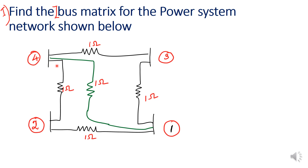This network consists of 4 buses. One of the buses is considered as a reference bus. So other than the reference bus, we have 3 buses: 1, 2, and 3. Three buses correspond to a 3x3 matrix. The Z-bus matrix is a 3x3 matrix here. The 4th bus is considered as the reference bus.